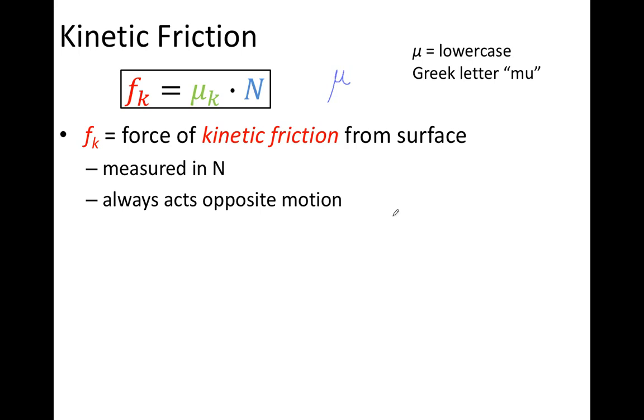So if you have, for example, a box that is sliding along a floor, and the box is sliding to the right, the force of kinetic friction would act parallel to the floor, and opposite motion. So that we would draw the arrow to represent the force of kinetic friction acting to the left on the box.